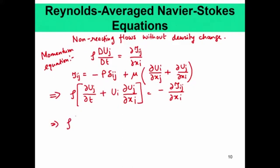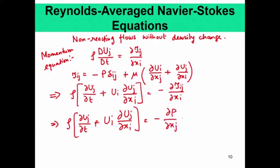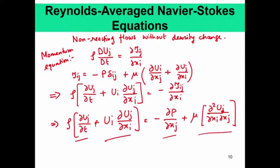We were talking about the probabilistic description of turbulent flows and we have just shown this momentum equation. This can be expanded to: d(uj)/dt plus ui * d(uj)/dxi equals minus dp/dxj plus mu times the viscous terms. This is the temporal acceleration, this is the convective acceleration, this is the pressure gradient, and these are the viscous terms.